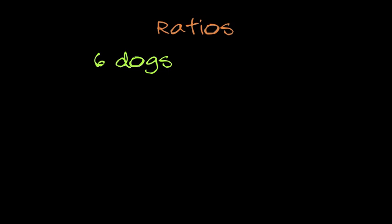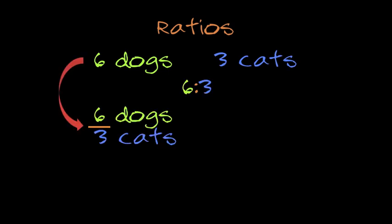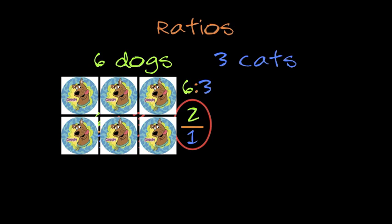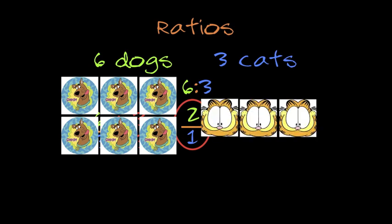So let's get in the know about ratios — a comparison of two different quantities, yo. If you got six dogs and only three cats, that's a ratio of six to three, dogs to cats. You can simplify it just like a fraction. Divide top and bottom — that's the action. So the simplified ratio is two to one. That means twice as many Scooby-Doos as Garfields, son. Nothing more, nothing less, it's really that simple.